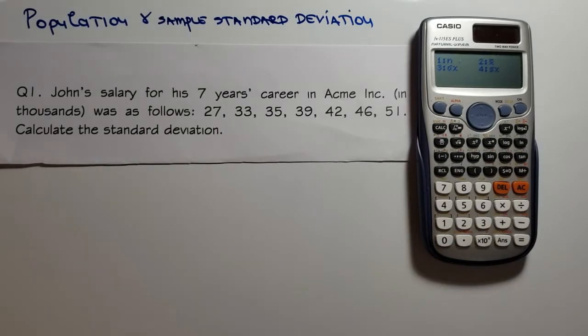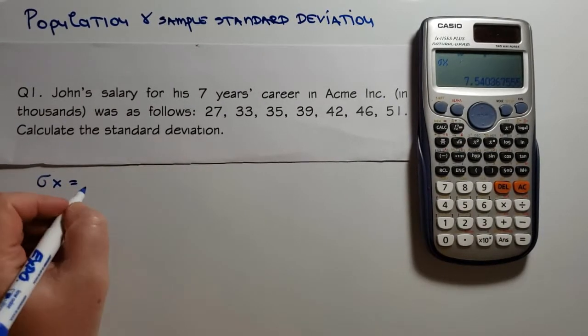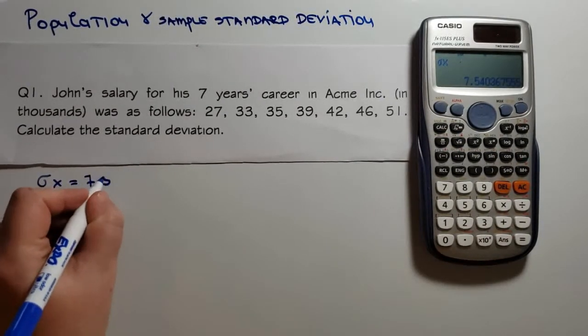Since we want to calculate the population standard deviation, we will press three and then equal and here it is, the result. Sigma X is equal to 7.54.